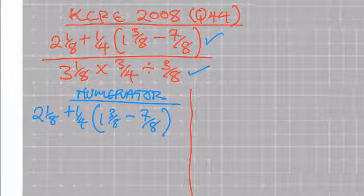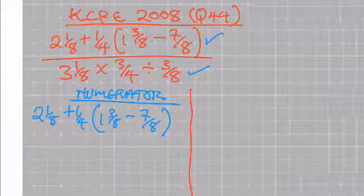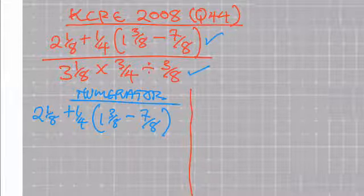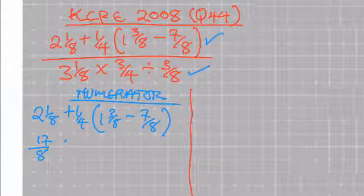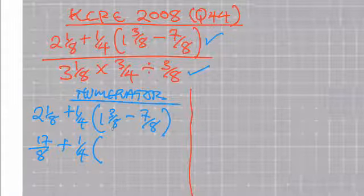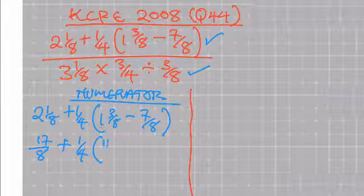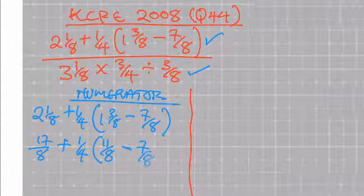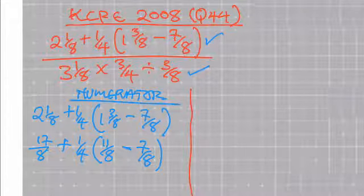Convert everything to improper fractions. The numerator is 2 and 1 over 8 plus 1 over 4 into 1 and 3 over 8 minus 7 over 8. 2 by 8 plus 1 is 17, so that gives me 17 over 8. Within the bracket: 8 plus 3 is 11, so we have 11 over 8. And then we have minus 7 over 8.